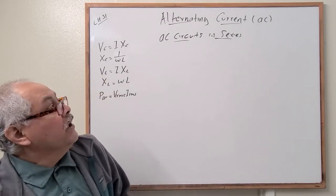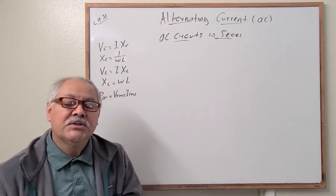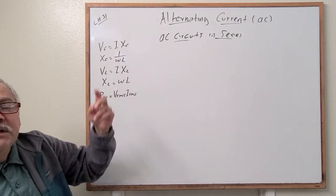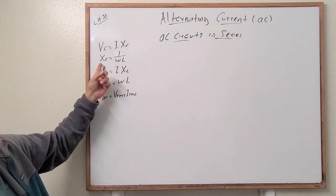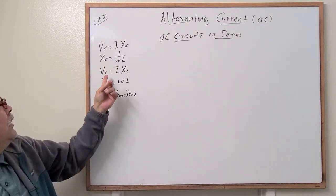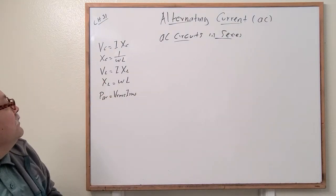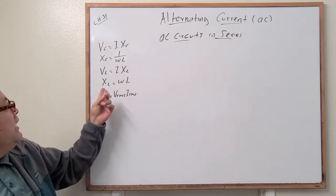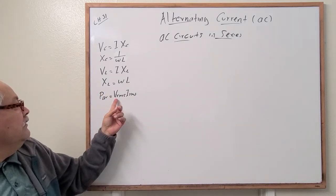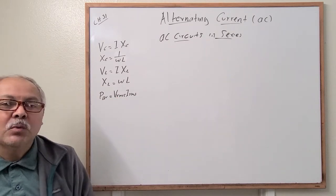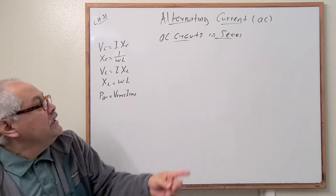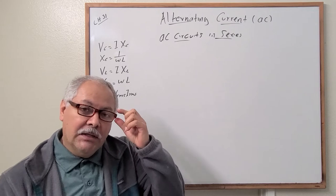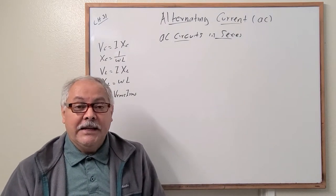Let's continue our series on AC circuits. From previous videos, we saw that the voltage across the capacitor equals current times the reactance, where the reactance equals a specific quantity. We also found the reactance of the inductor and the average power, which is the RMS voltage times the RMS current. Now let's go to AC circuits in series using resistors, inductors, and capacitors.